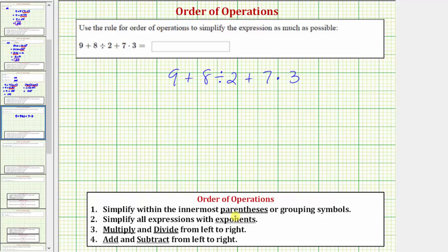So to begin simplifying we want to multiply and divide from left to right. So looking at our expression from left to right we first want to find this quotient and then find this product.